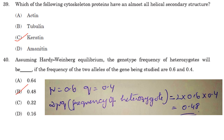Assuming Hardy-Weinberg equilibrium, the genotype frequency of heterozygotes will be — given allele frequencies of 0.6 and 0.4, where P = 0.6 and Q = 0.4. The frequency of heterozygotes is 2PQ = 2 × 0.6 × 0.4 = 0.48. Answer is option B.